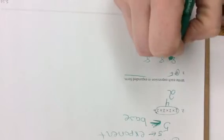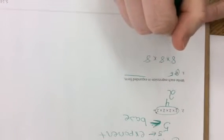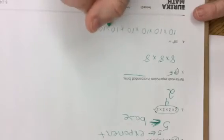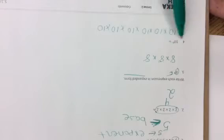This is called expanded form — we write the exponential form out in expanded form. Take base 8: how many do we need according to the exponent 3? So 8 to the third power, sometimes called 8 cubed, is 8 times 8 times 8. For 10 to the sixth power: how many 10s do I need? 10 times 10 times 10 times 10 times 10 times 10. We don't have to solve it.